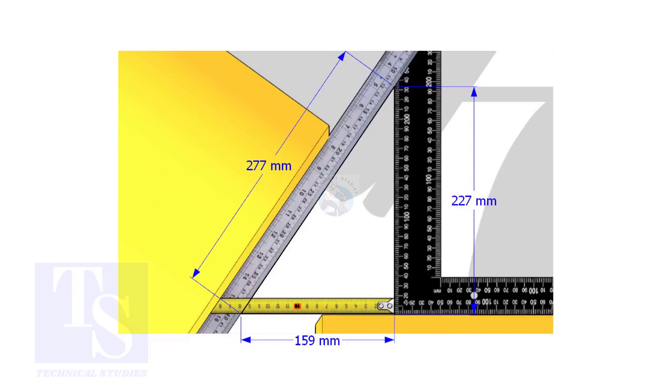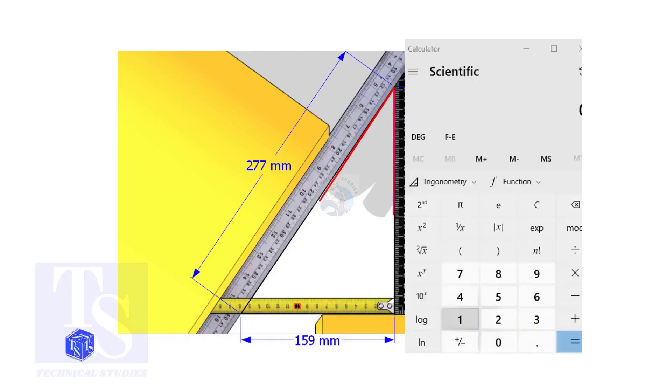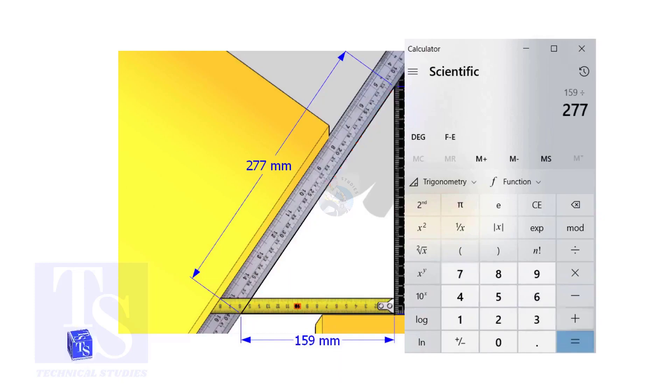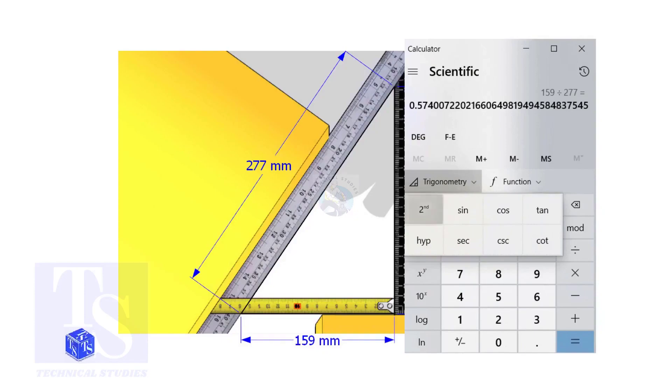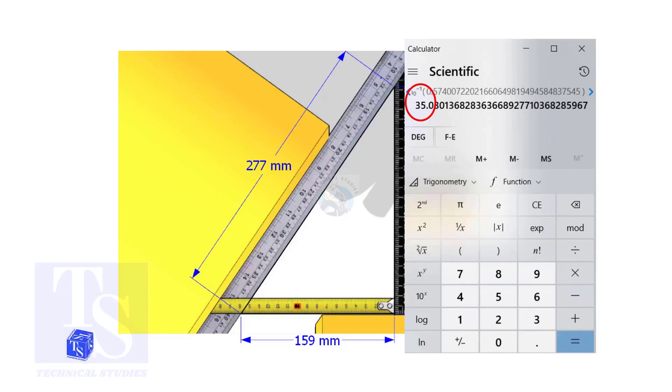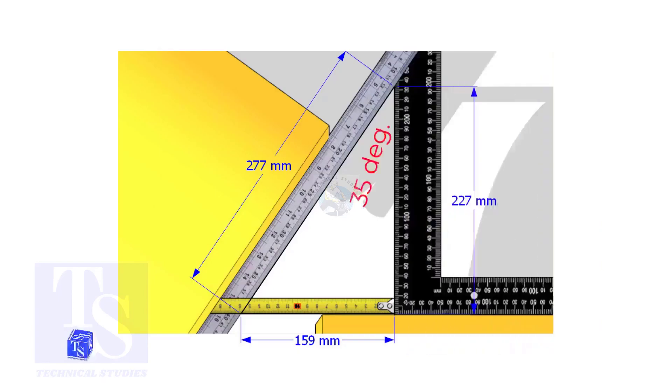Let us calculate the including angle. If you apply the sine rule, the angle will be 159 divided by 277 shift sine. So, the answer is 35 degrees.